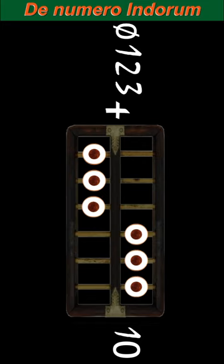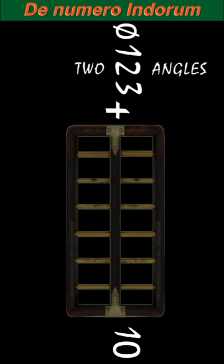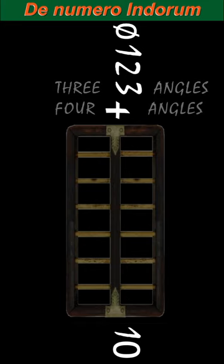The paleography of Numero Indorum begins with a zero. The first digit with a single angle. The second digit with two angles. The third digit with three angles. The fourth digit with four angles in the shape of a cross.